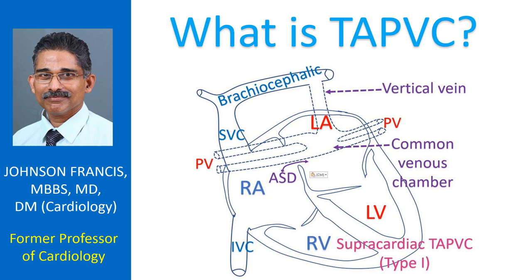TAPVC stands for Total Anomalous Pulmonary Venous Connection. It is also known as TAPVD or Total Anomalous Pulmonary Venous Drainage. Normally, pulmonary veins join the left atrium. When they drain to the right atrium through one of the blood vessels leading to the right atrium, it is known as TAPVC.